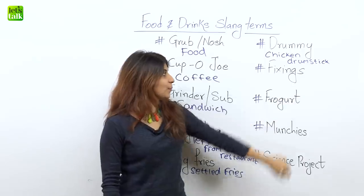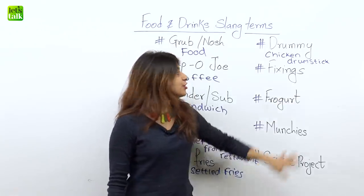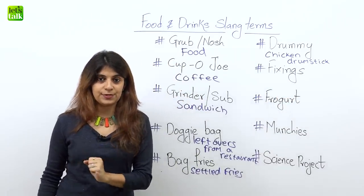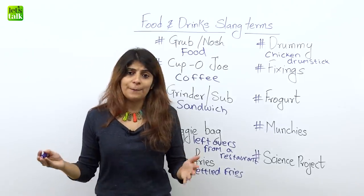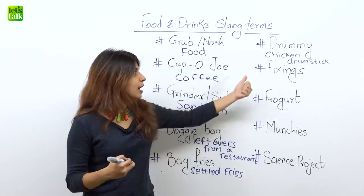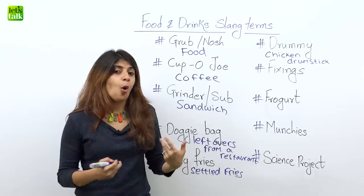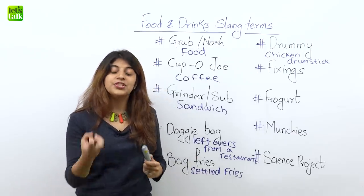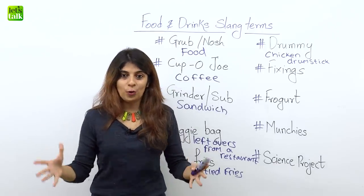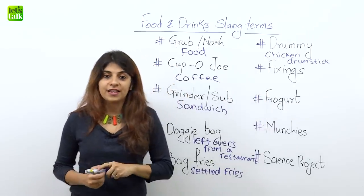The next one is 'fixings.' Fixings is a slang word for side dishes. When you order a big meal, you also get some side dishes that you can relish. For example, some baked potato, mashed potatoes, or fries — these are all side dishes with your main meal. So those side dishes are called fixings.